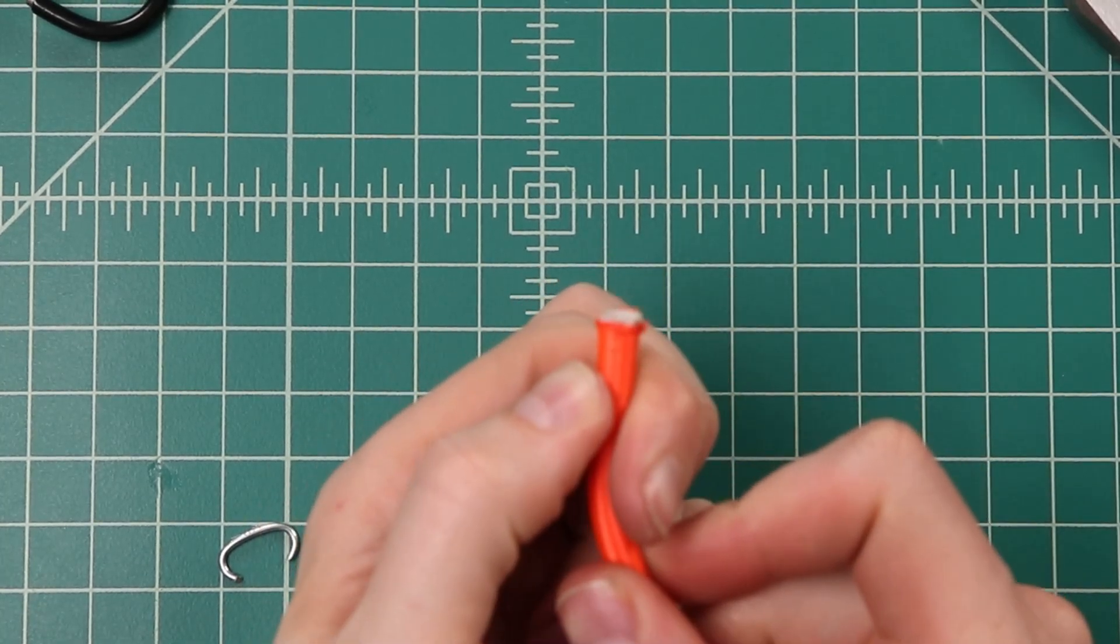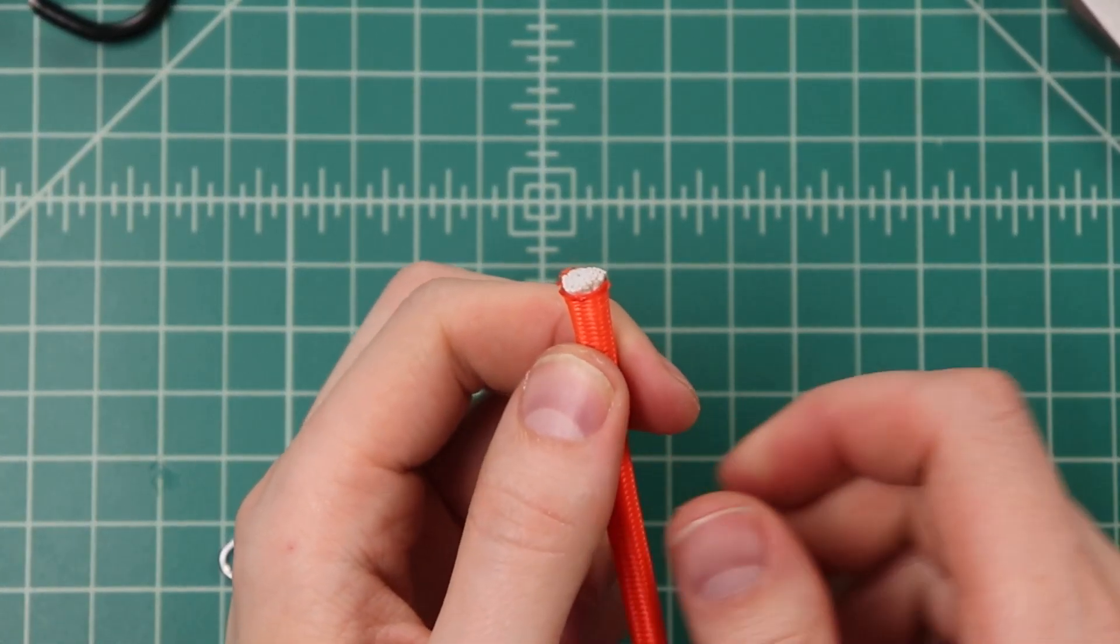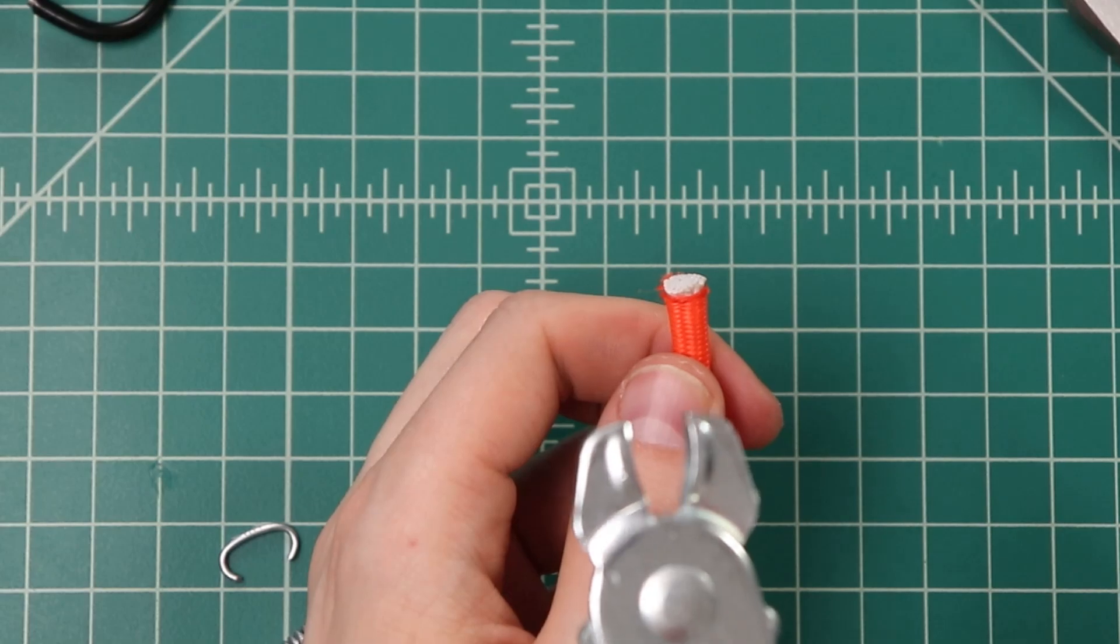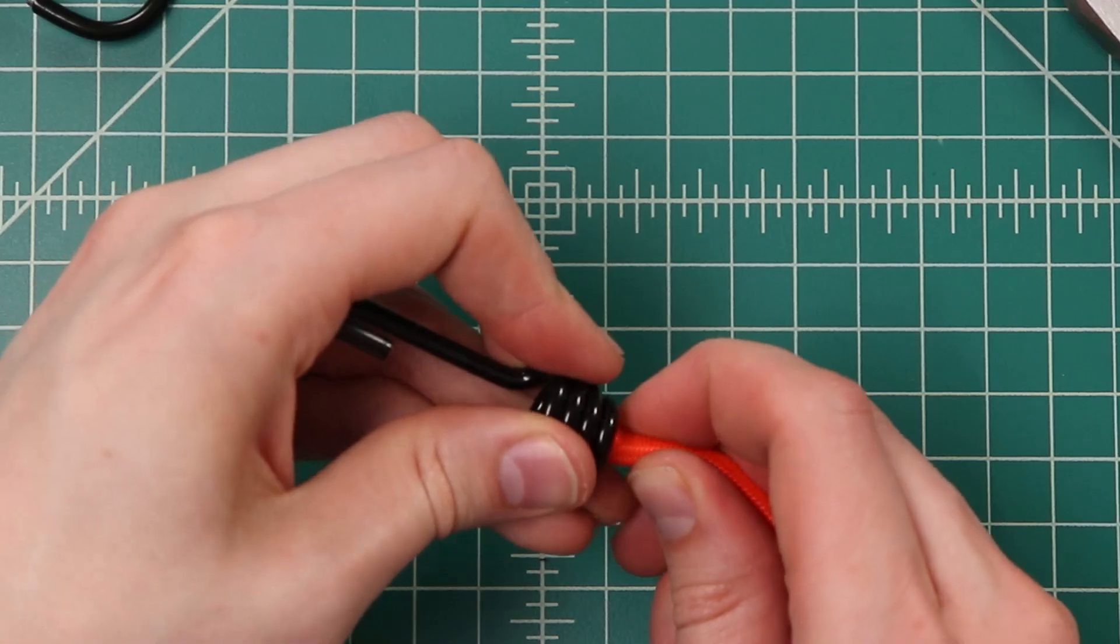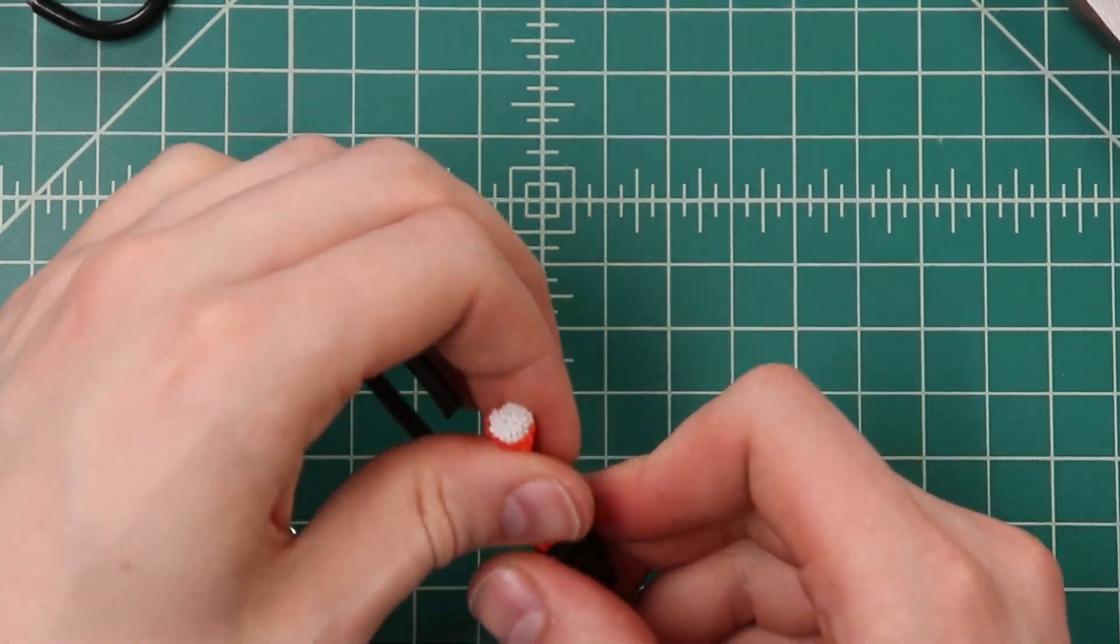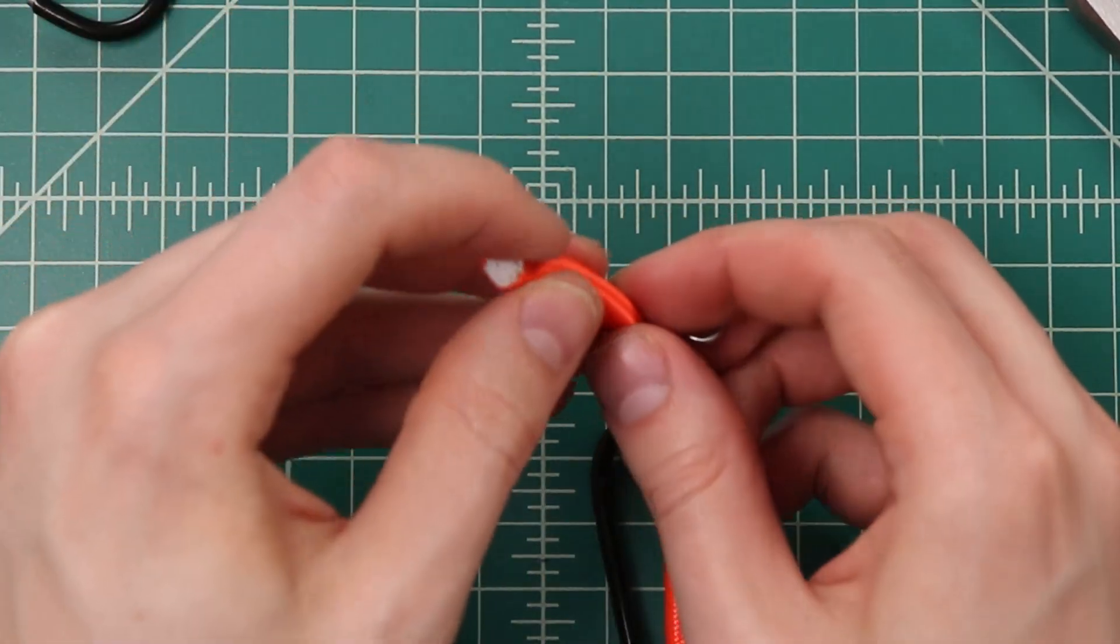Now we'll do the other end, using a regular pliers, since most of us aren't going to have hog ring pliers laying around. Again, fit it through the end, and set it up just like before.